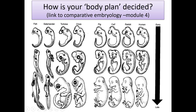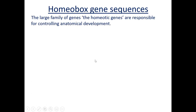So how is your body plan decided? Because clearly, if we look at early-stage embryos from fish, amphibian salamander, reptile tortoise, bird chick, and four different mammal-based embryos, you wouldn't know which is which. There's no way on earth you'd know which is which looking at them. But clearly, as we start to differentiate and more mitosis and apoptosis happens, then we can start to say, oh yeah, they're going to be the fish, they're definitely the birdie type ones. So what are the genes that do it? The big family of genes that control your anatomical development are called the homeotic genes — there are loads of them across loads of different chromosomes, and they all are involved in controlling anatomical development.